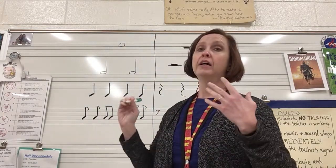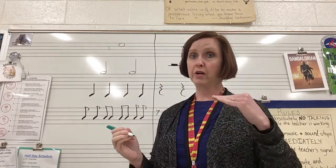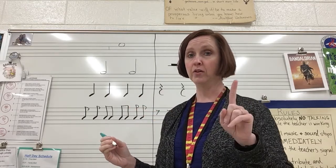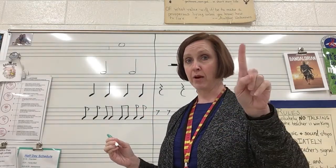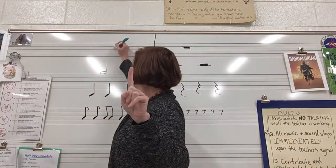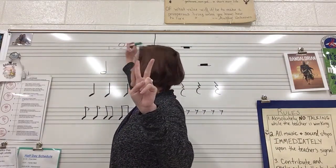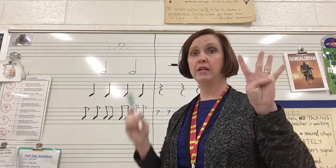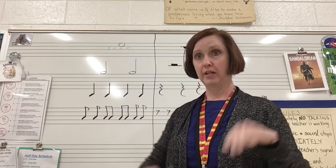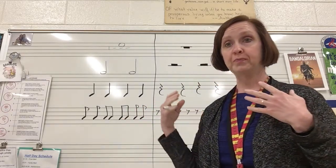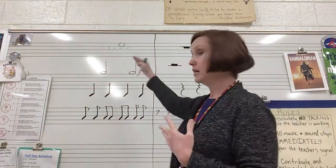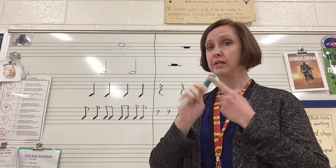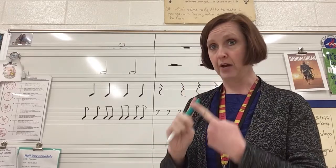No matter what the time signature is, when you are writing in counts at the beginning of a measure you always start with one. To show sustained sound, we are going to add a dash for each beat that follows that one. So if the whole note gets four beats, I write down the one, then a dash for two, a dash for three, and a dash for four — so we have: one, dash, dash, dash.